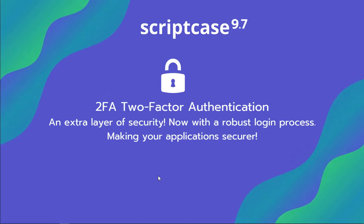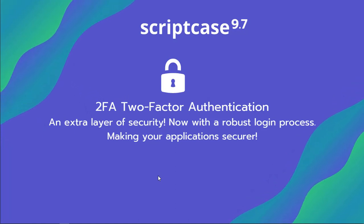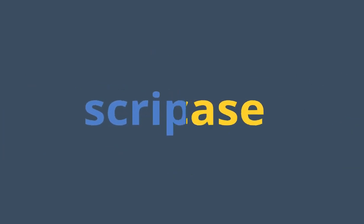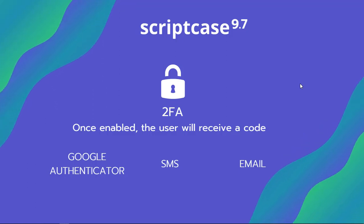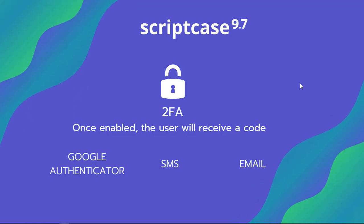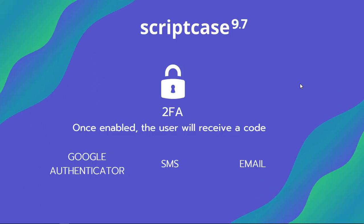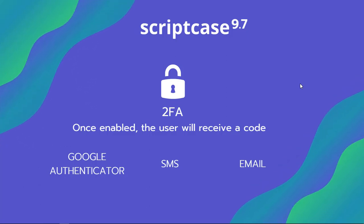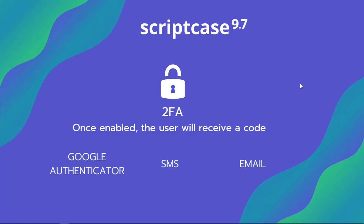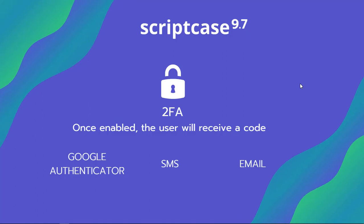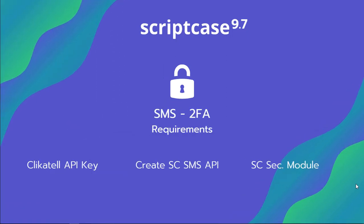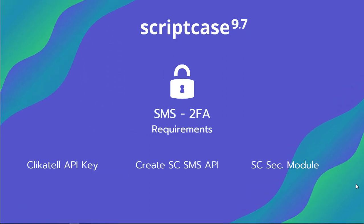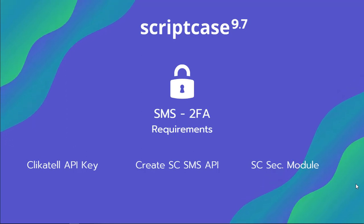Hello and welcome back to another Scriptcase tutorial. Fred here from Scriptcase, and today we're going to see how the two-factor authentication works in Scriptcase. Basically, by using two-factor authentication, the final user will receive a code by SMS, by email, or even by Google Authenticator, which is an app that can be installed on your Android or iOS phone. During this tutorial, we're going to talk about the SMS two-factor authentication within Scriptcase.